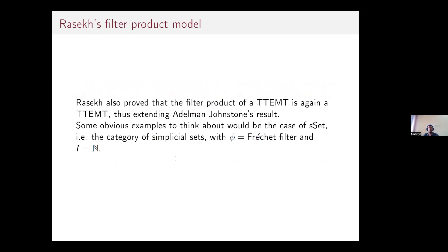Rasek proved that the filter product of a type-theoretic elementary model topos is again a type-theoretic elementary model topos. This extends Adámek–Johnstone's result that the filter product of an elementary topos is again an elementary topos, which was a classical result. Filter products of infinity-one categories were introduced by Rasek — we did not previously have a notion of that.